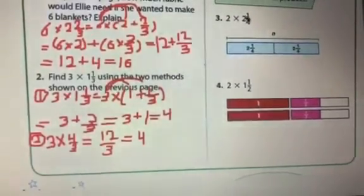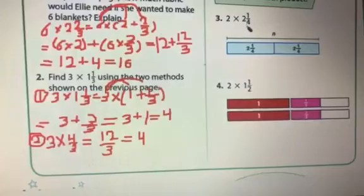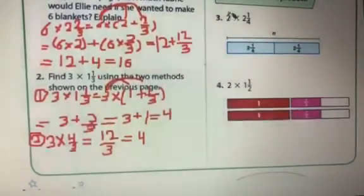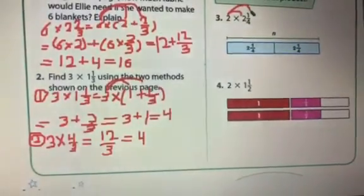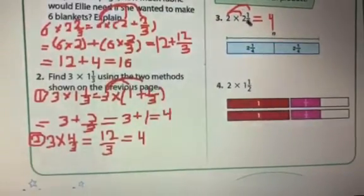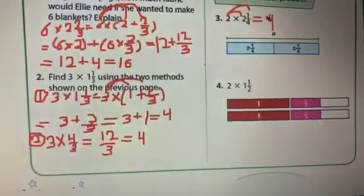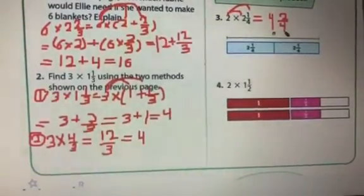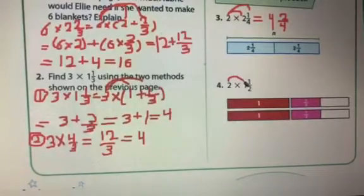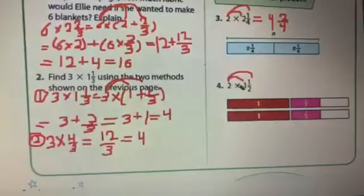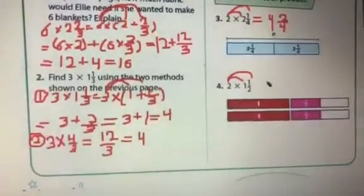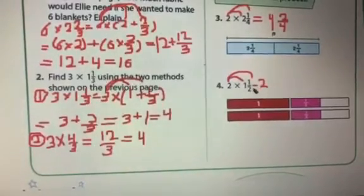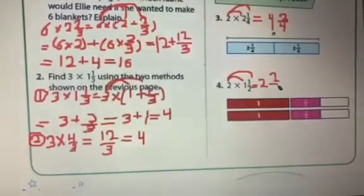Now, find each product. Number 3: 2 multiply 2 and 1 over 4. I multiply 2 by 2, and then 2 by 1 over 4. 2 by 2 is equal 4. And 2 multiply 1 over 4 is equal 2 multiply 1, which is equal 2 over 4.